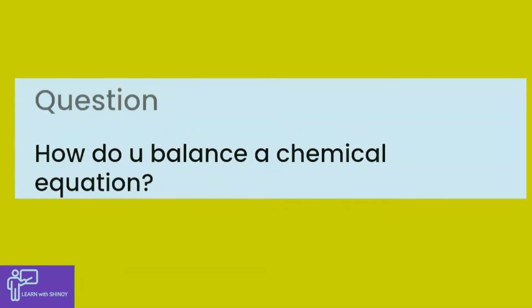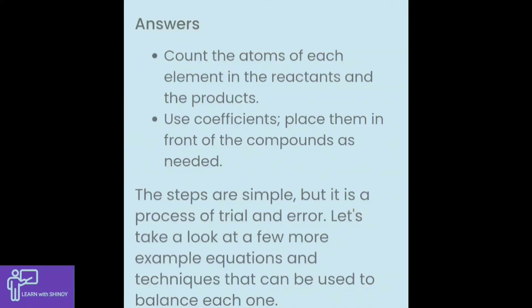How do you balance a chemical equation? Count the atoms of each element in the reactants and products. Use coefficients — place them in front of the compounds as needed. The steps are simple, but it is a process of trial and error. Let us take a look at a few more example equations.